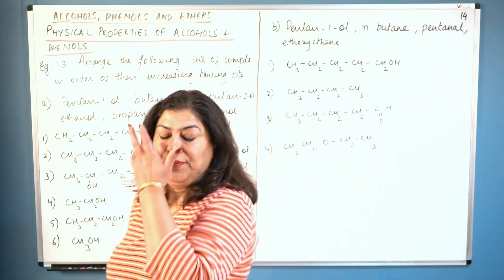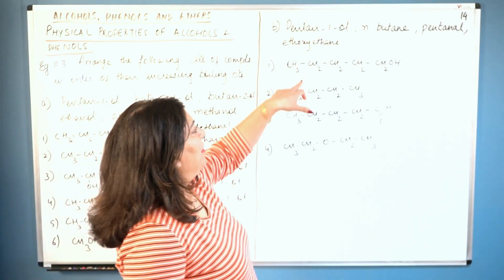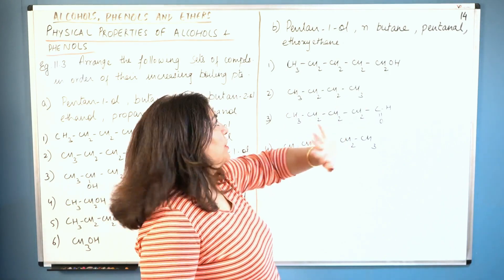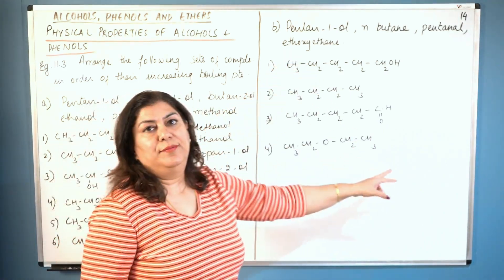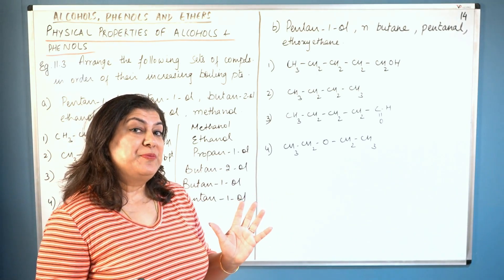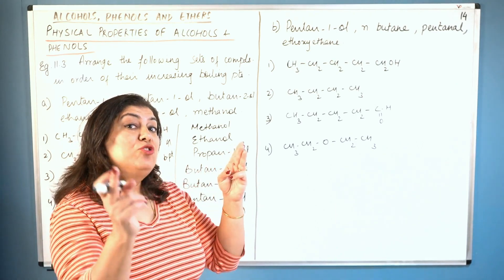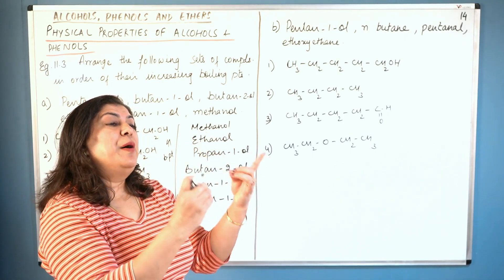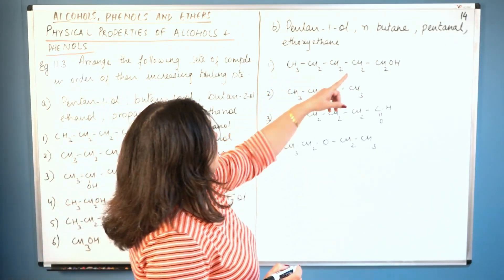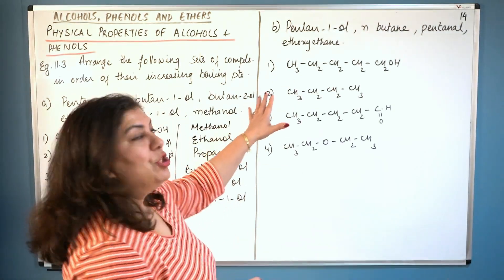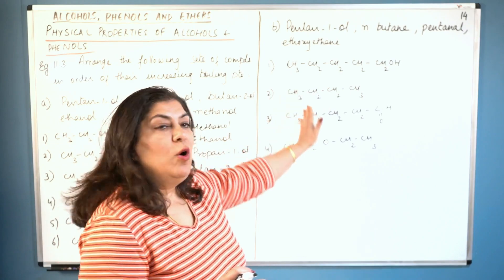Now let's come to part B of the question, where we again arrange compounds in order of increasing boiling points. The molecules are pentan-1-ol, n-butane, pentanal (an aldehyde), and ethoxyethane (an ether). Here we have different functional groups, so all three factors come into play. Pentan-1-ol is an alcohol, so it should have the highest boiling point among these categories.